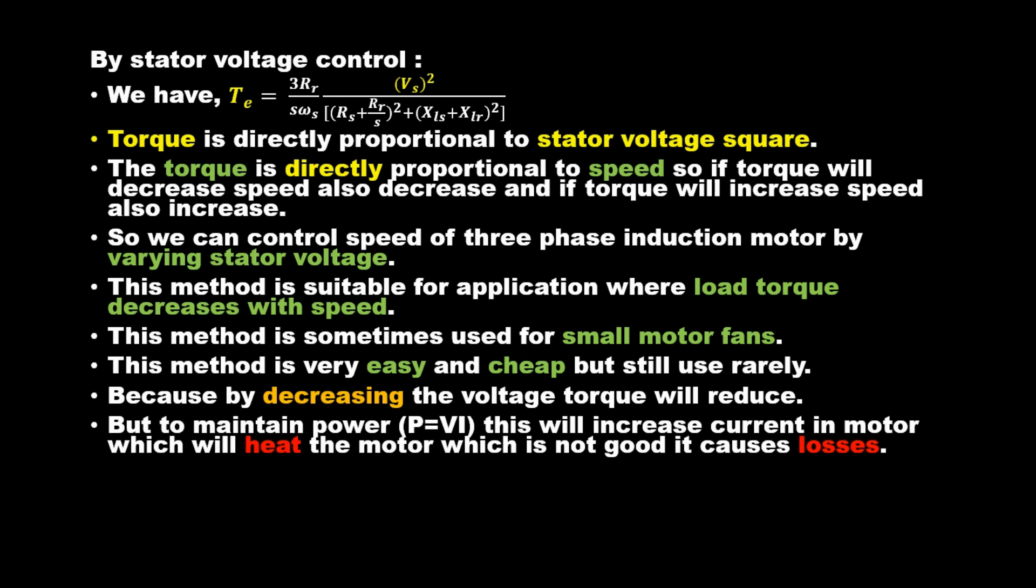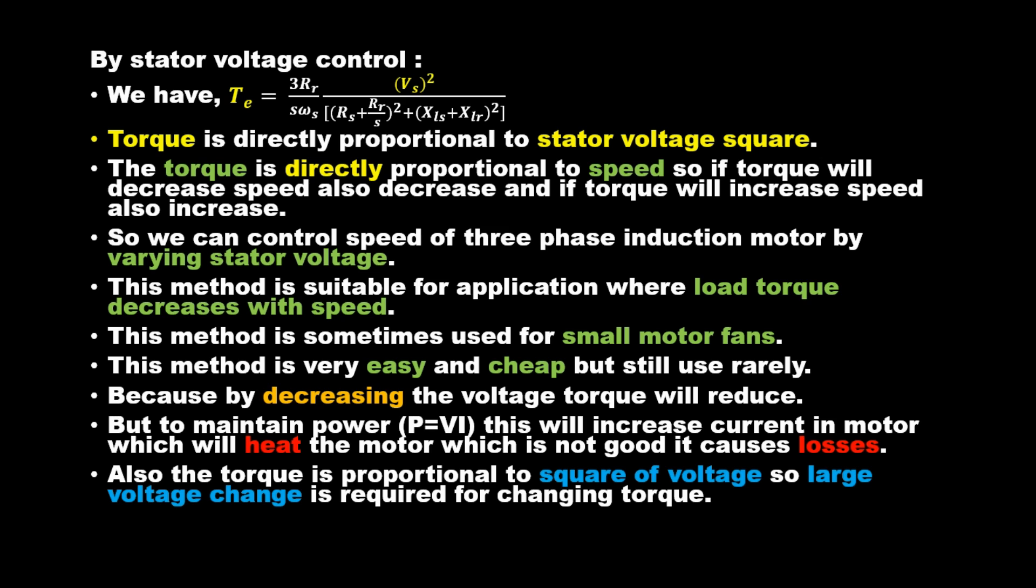But to maintain power, P equals VI, this will increase current in the motor which will heat the motor, which is not good and causes losses. Also, the torque is proportional to square of voltage, so large voltage change is required for changing torque.